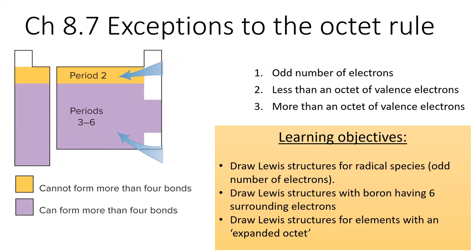The most common exception to the octet rule is for heavier atoms, which can have an expanded octet of more than 8 electrons.